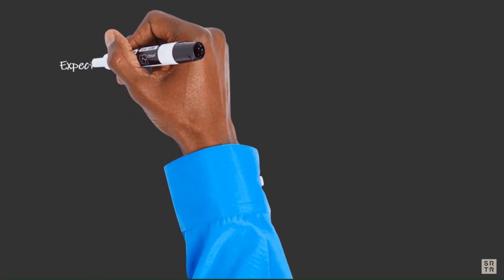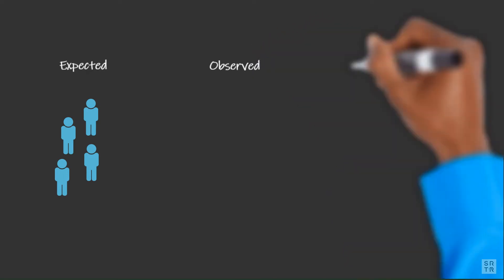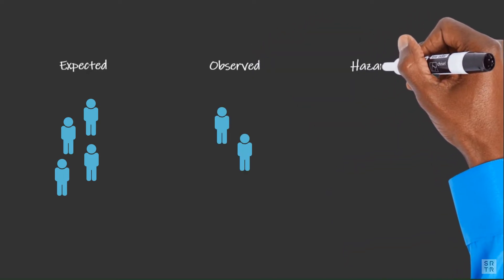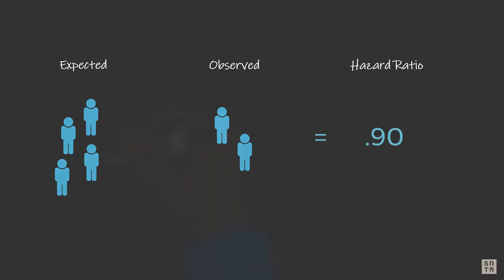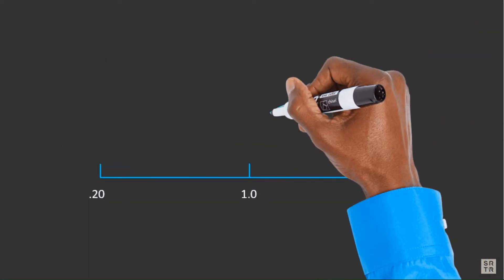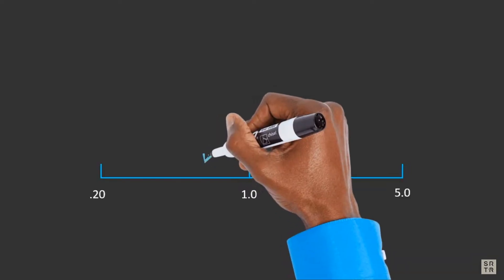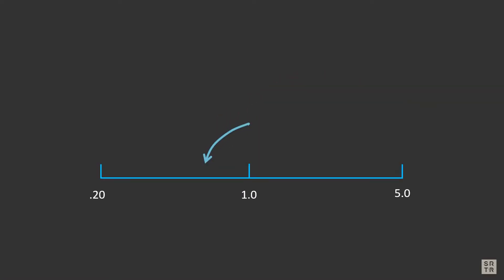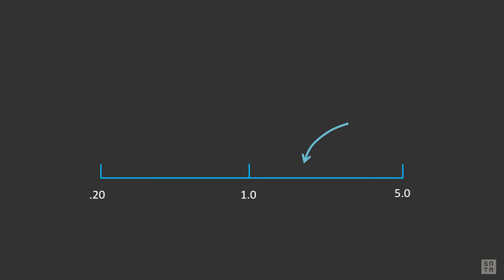A hazard ratio is a measure of how many patients did not survive the first post-transplant year with a functioning graft, relative to how many were expected not to survive it. A hazard ratio of 1.0 means we observed exactly the number of graft failures as expected at the program, after considering the types of patients and donors at that program. A hazard ratio of 0.5 means the program experienced half the failures expected, while a hazard ratio of 2 means the program experienced double the number of failures expected.